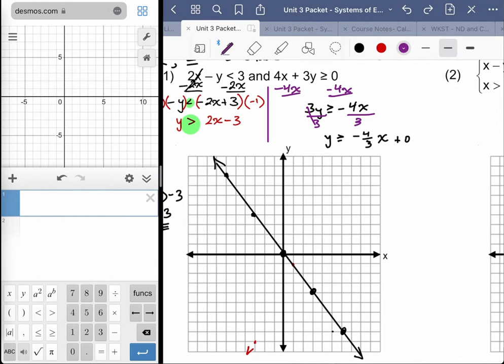But again, you want to pick a point, a nice convenient point that's not on the line. Zero, zero is my go-to. But unfortunately, it's actually on the line. So I can't use zero, zero here. So I would test something else. Next best thing, one, zero.